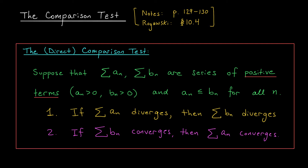Let's jump right in with the statement of the comparison test. Sometimes people will refer to this as the direct comparison test, and that's because there's a different way to compare series using limits. We'll learn about that technique in the next lesson — it's called the limit comparison test. For direct comparison, here's the statement.